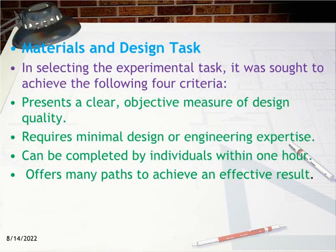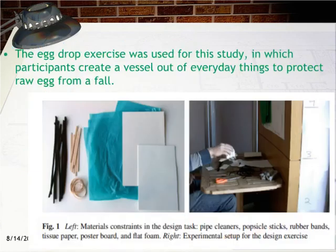Materials and design task: In selecting the experimental task, it was sought to achieve four criteria — a clear objective measure of design quality, minimal design or engineering expertise required, completion by individuals within one hour, and many paths to achieve an effective result. The egg drop exercise was used, in which participants create a vessel out of everyday objects to protect a raw egg from a fall. Performance is measured by dropping a single egg from a one-foot marker, then two, three, and so on until the egg cracks. The highest height, in feet, at which the egg survives a fall is used to assess task performance.